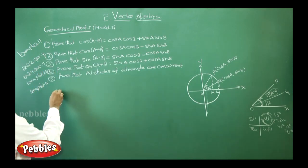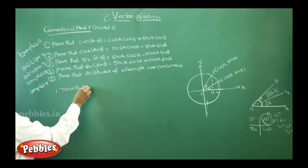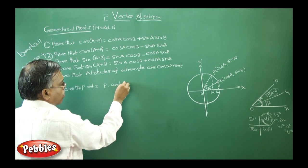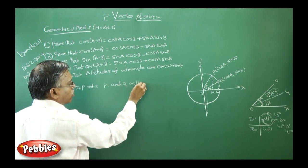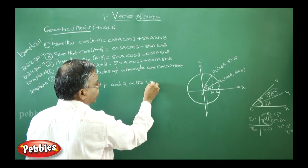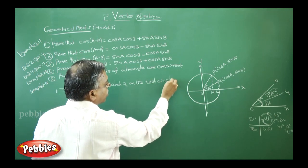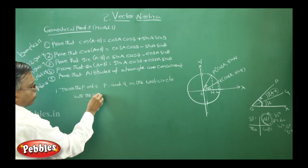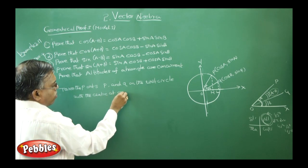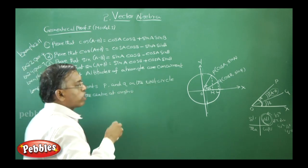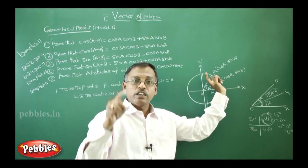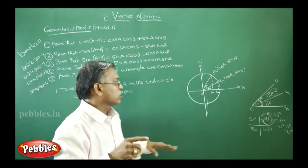First point: take the points P and Q on the unit circle with the center at origin O.